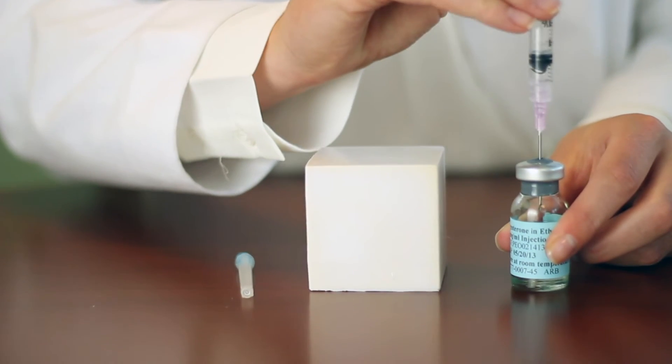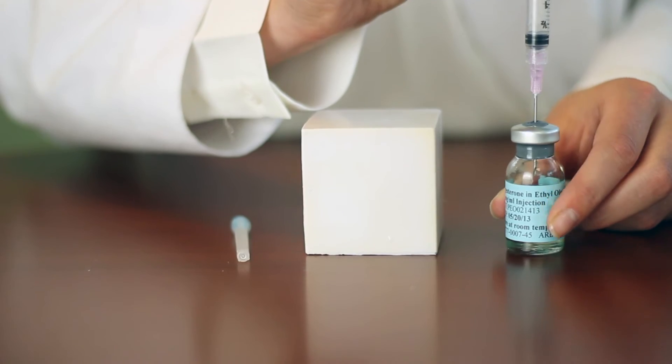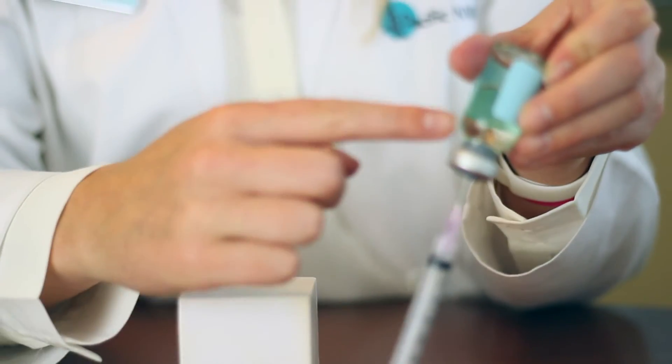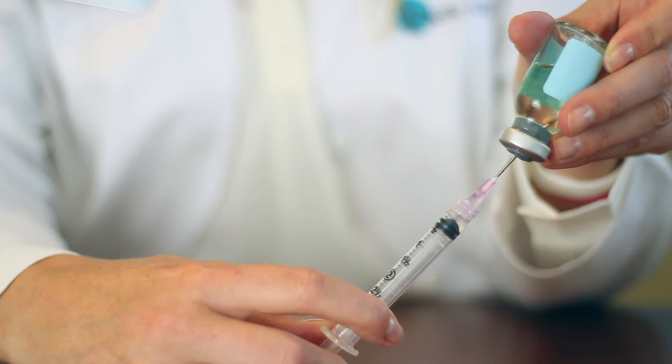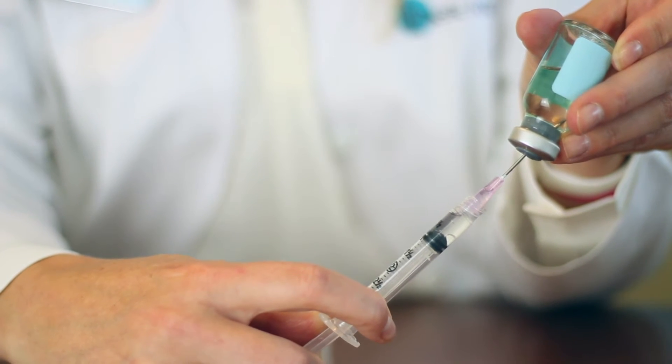Inject the air into the vial. Flip it upside down so that the tip of the needle is submerged in the progesterone. Draw down to your dose.